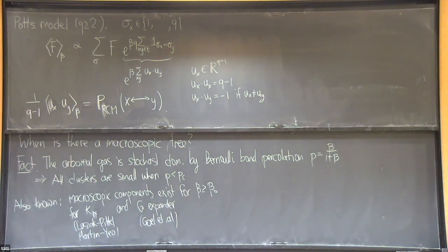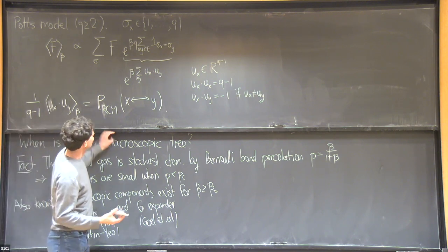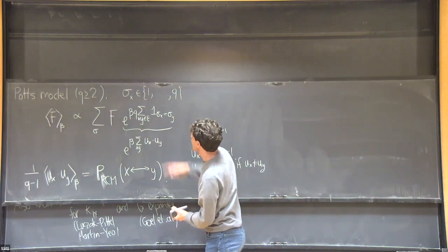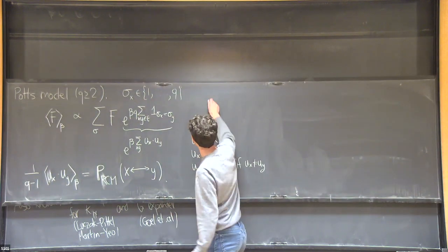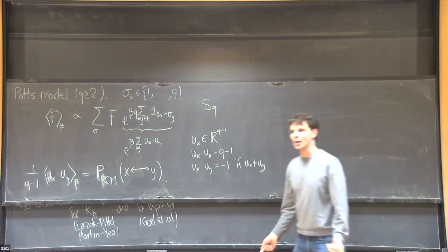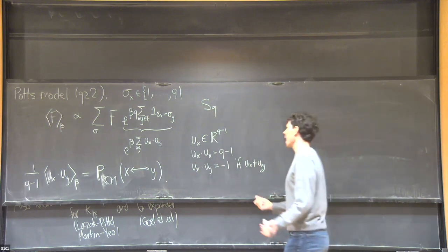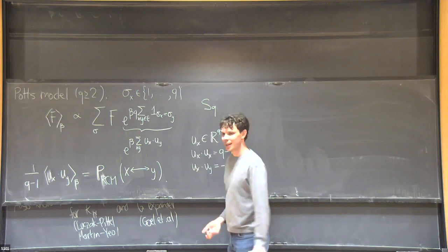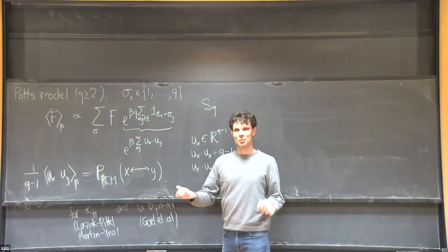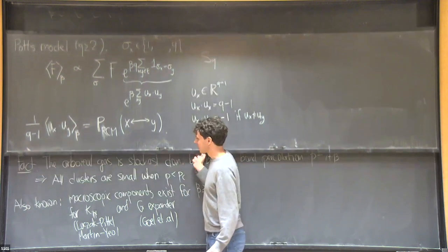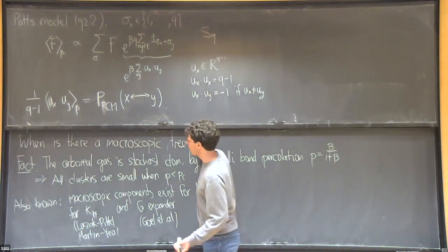As Q goes to zero, the Potts model — whose symmetry group is S_Q, the symmetric group on Q elements — somehow becomes continuous in this process. The Q-to-zero limit is very much related to hyperbolic sigma models, which I'll now explain.